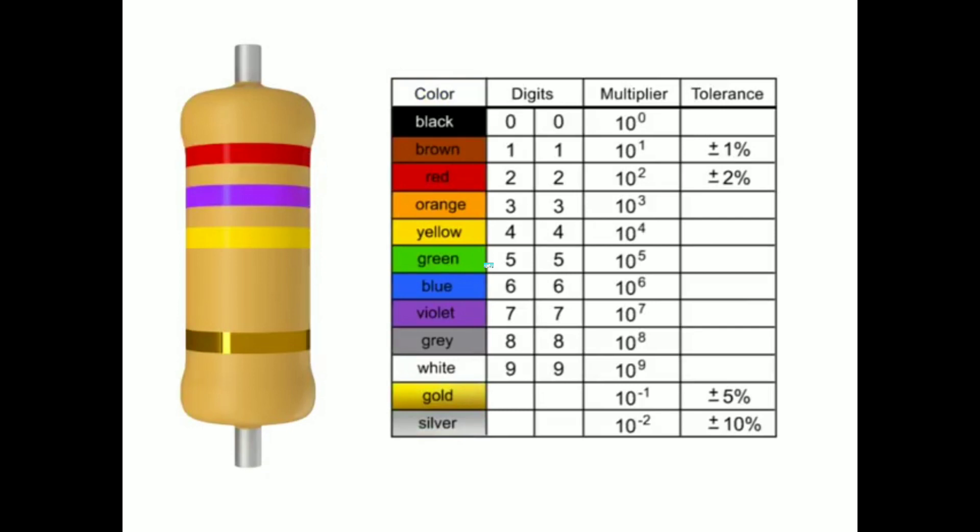In a four band resistor, the first two bands represent the digits or significant figures. The third band indicates the multiplier and the fourth band indicates the tolerance.